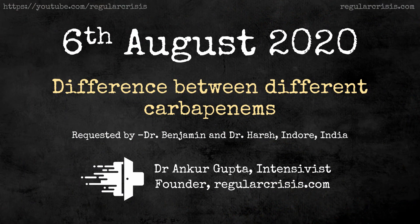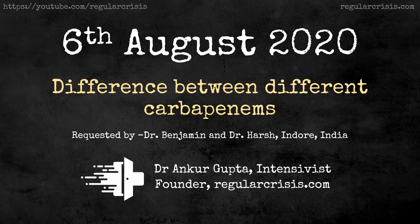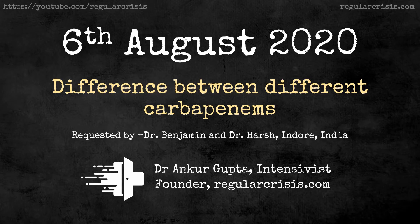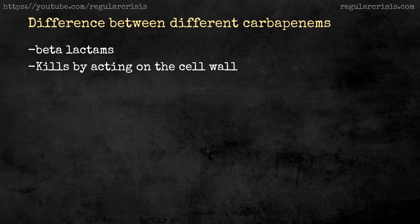Hello everyone, today is 6th August 2020. I'm Dr. Ankur Gupta from regularcrisis.com. We are in the midst of the COVID pandemic and I hope all of you are doing fine. Today we will be discussing a very common question among medical students: what are the differences between different carbapenems? Carbapenems are one of the most commonly used antibiotics in the ICU and ER. Today's session is made especially on the request of Dr. Benjamin and Dr. Hirsch, who work in the intensive care unit in Indore, India.